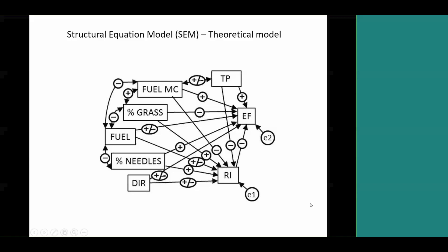Once we calculated our emission factors and took all these measurements, we came up with an a priori model of how we think the system might be working. Many of these variables might affect emission factors through reaction intensity — that rate of heat release in the combustion process — but they might also have direct effects. We considered both as possible. Fuel moisture content we thought would increase the emission factor. Percent grass, based on past studies, tends to be associated with lower emission factors. Pine needles are kind of smoky. Head fire direction would probably increase reaction intensity, while a backing fire would decrease it.